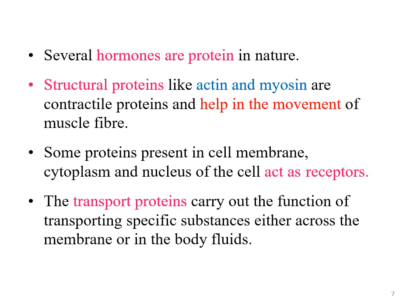Many structural proteins are contractile proteins. For example, actin and myosin are proteins that help in the movement of the muscle fiber. Some proteins act as receptors — receptors are chemical structures composed of proteins that receive and transduce signals that may be integrated into biological systems. In simple words, receptors can receive information in the form of ligands. Ligands are chemical substances; these may be hormones or neurotransmitters that first bind with the receptor and pass information towards the cell.